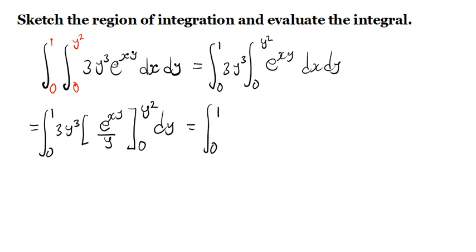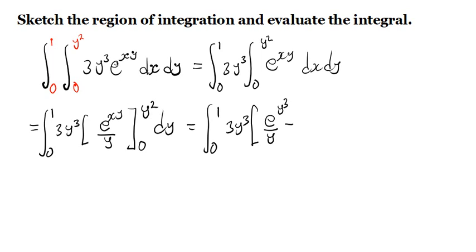This becomes the integral from 0 to 1. We have 3y³ times the evaluated expression. Don't cancel right away — first evaluate: substituting x equals y² into e^(xy)/y gives e^(y³)/y, and substituting x equals 0 gives e⁰/y which is 1/y. So we get 3y³ times (e^(y³)/y − 1/y) dy.